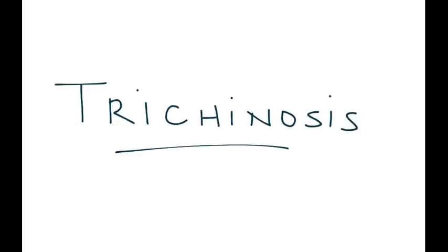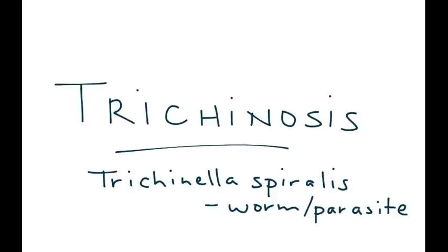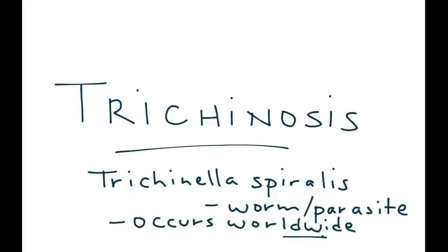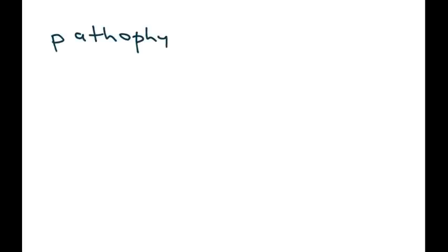Trichinosis is the topic for this video. Trichinosis is caused by a worm known as Trichinella spiralis. This worm and parasite infection occurs worldwide. How does a human get infected with this worm?